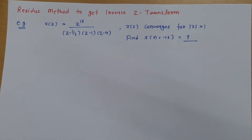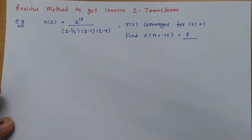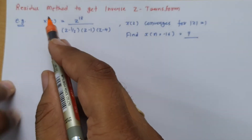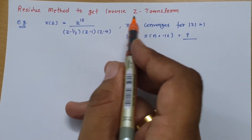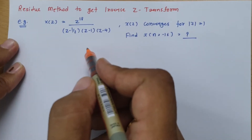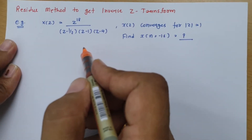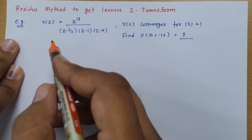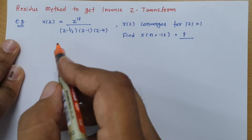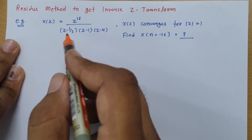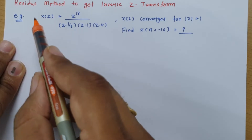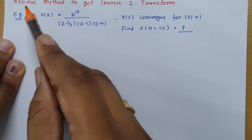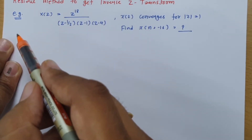Welcome to the Signal and System lecture series. In this session I'll be explaining the residue method to get the inverse Z transform. I have already explained two methods to get inverse Z transform: one is the long division method and the second is the direct method. Here in this session I'll be explaining the residue method.